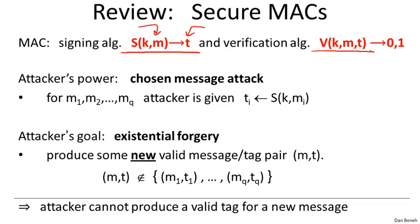A MAC is secure if it is existentially unforgeable under a chosen message attack. In other words, the attacker is allowed to mount a chosen message attack where he can submit arbitrary messages of his choice and obtain the corresponding tags for those messages. And then despite the ability to generate arbitrary tags, the attacker cannot create a new message-tag pair that was not given to him during the chosen message attack.